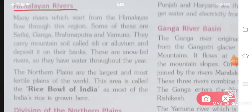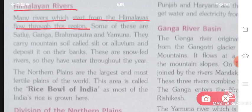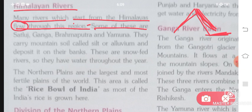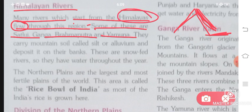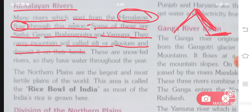Next topic is Himalayan rivers. Many rivers which start from the Himalayas flow through this region. Rivers start from the mountain areas and flow towards the flat lands — this is because water flows downhill from mountains toward flatlands. Some of these rivers are the Sutlej, Ganga, Brahmaputra, and Yamuna. They carry mountain soil called silt or alluvium and deposit it on their banks.